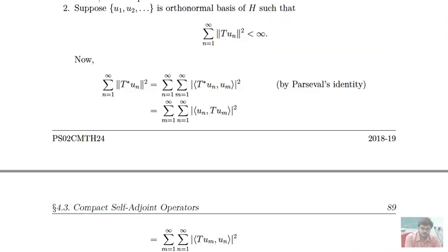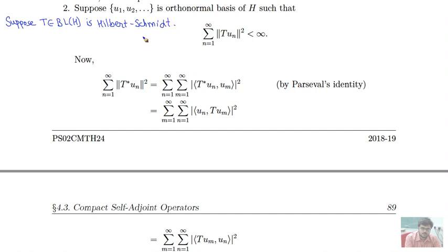Suppose T is a Hilbert-Schmidt operator, T belongs to BL(H). By definition, this means that given any orthonormal basis — say u₁, u₂, and so on — for H, the sum is finite: the series summation n equals 1 to infinity of the norm of T(uₙ) squared is convergent.